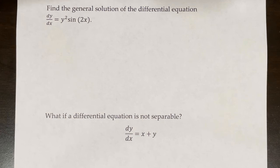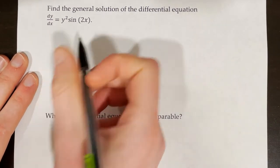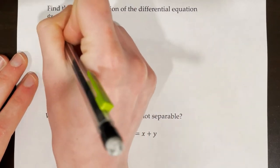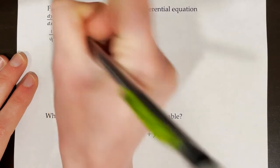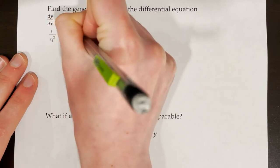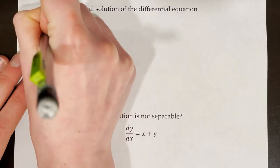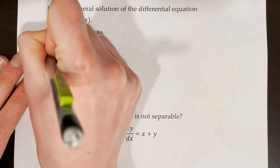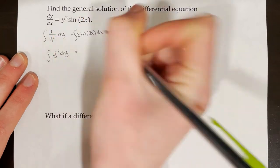Find the general solution of dy/dx = y²·sin(2x). The first thing to do is divide both sides by y². Instead of writing dy/y², write it as (1/y²)·dy — then multiply both sides by dx to get sin(2x)·dx.